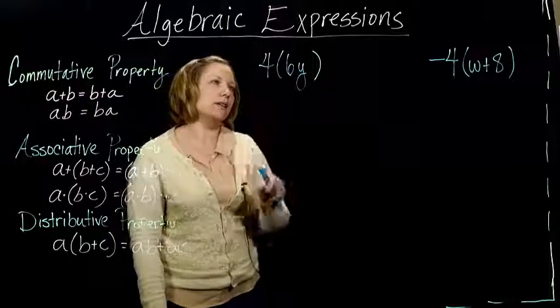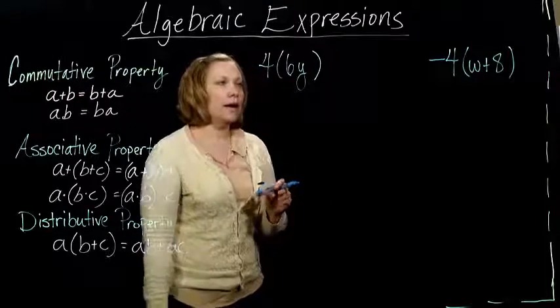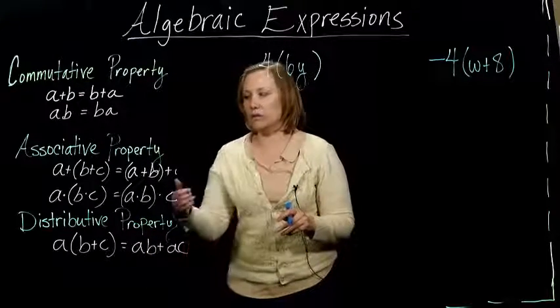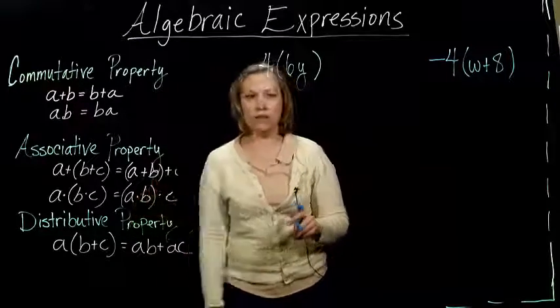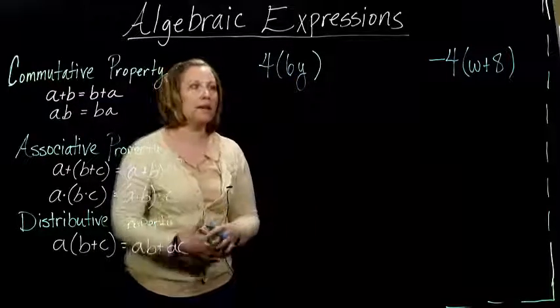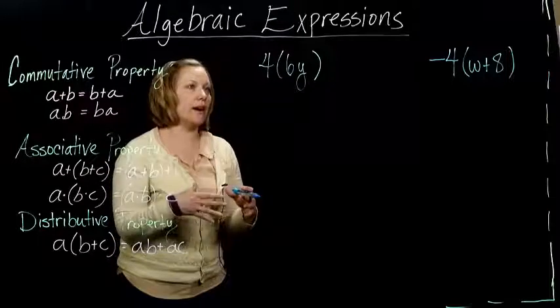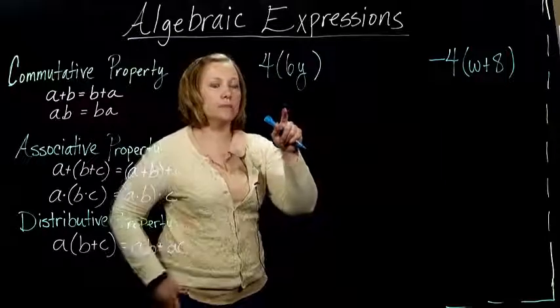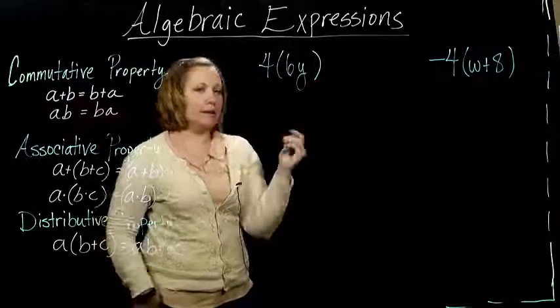This guy is 4 times 6 times y, and so again we're going to be able to use one or some of these properties of numbers to simplify this. According to these properties, I've got all multiplication here, and so according to these properties.